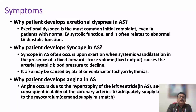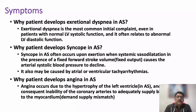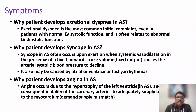Dyspnea occurs mainly due to left ventricular dysfunction where systolic function is reduced because of aortic stenosis. This produces reduced systemic circulation, back pressure on the left atrium, and ultimately pulmonary hypertension. Reduced systemic circulation causes weakness and lethargy, while back pressure to the left atrium and pulmonary circulation produces breathlessness.